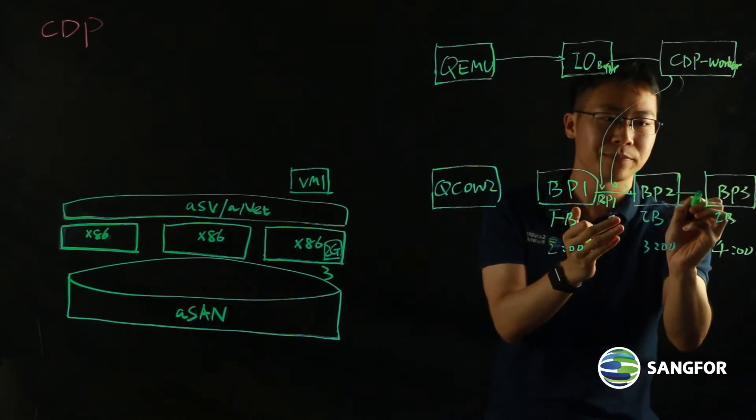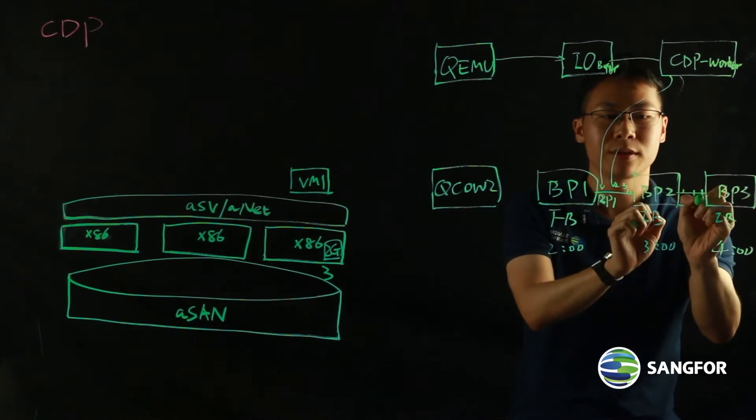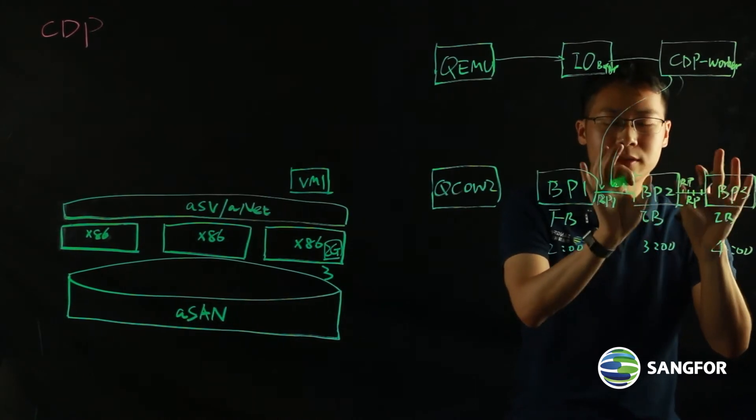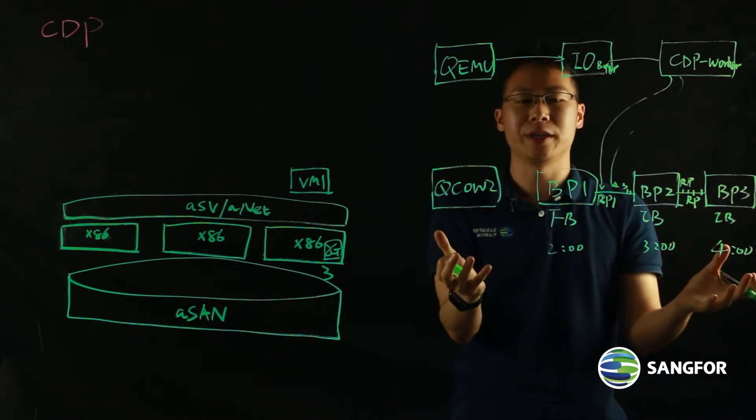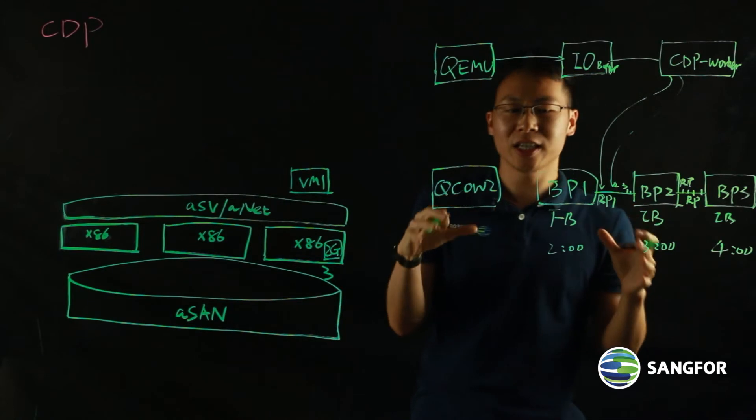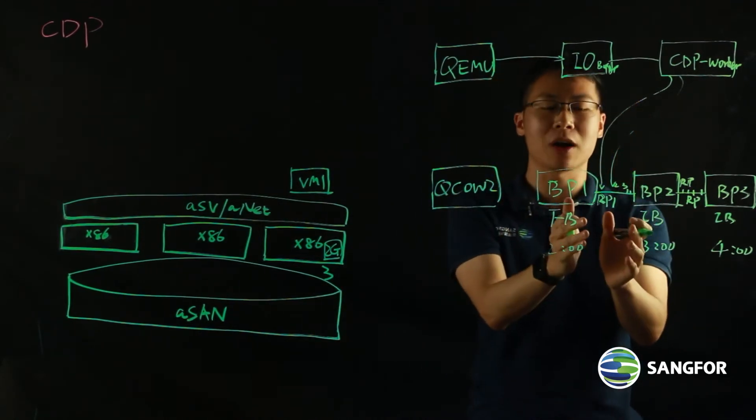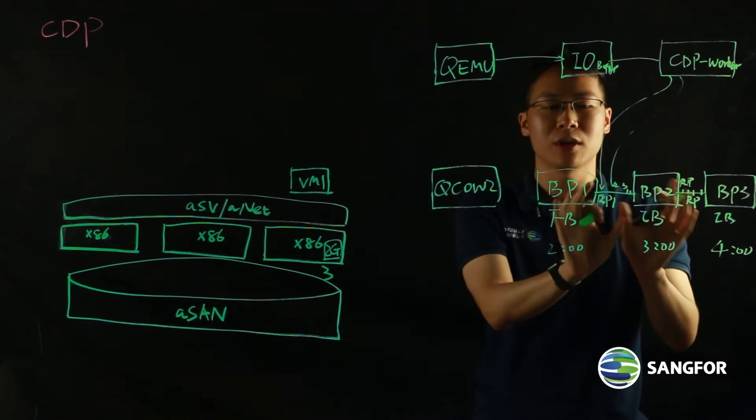And then the CDP worker will distribute that IO and display it on the user interface as a recovery point. So I could have all the recovery points in between the backup points to form your CDP repository. So basically, in the CDP repository, I have my backup file. I have my IO logs, which is displayed as a recovery point on the user interface.